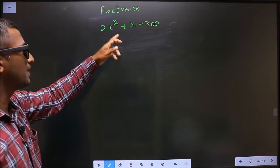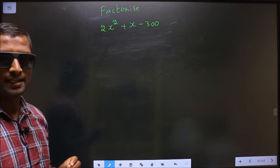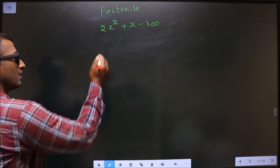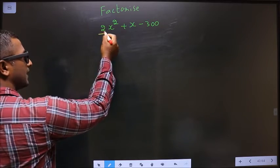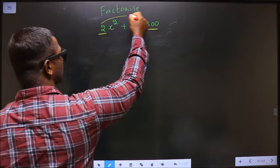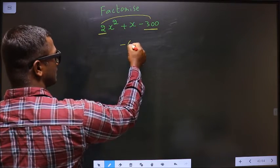Factorize 2x² + x - 300. To factorize any quadratic equation, step 1: whatever number you have before x², multiply it with the constant. So 2 × (-300) = -600.